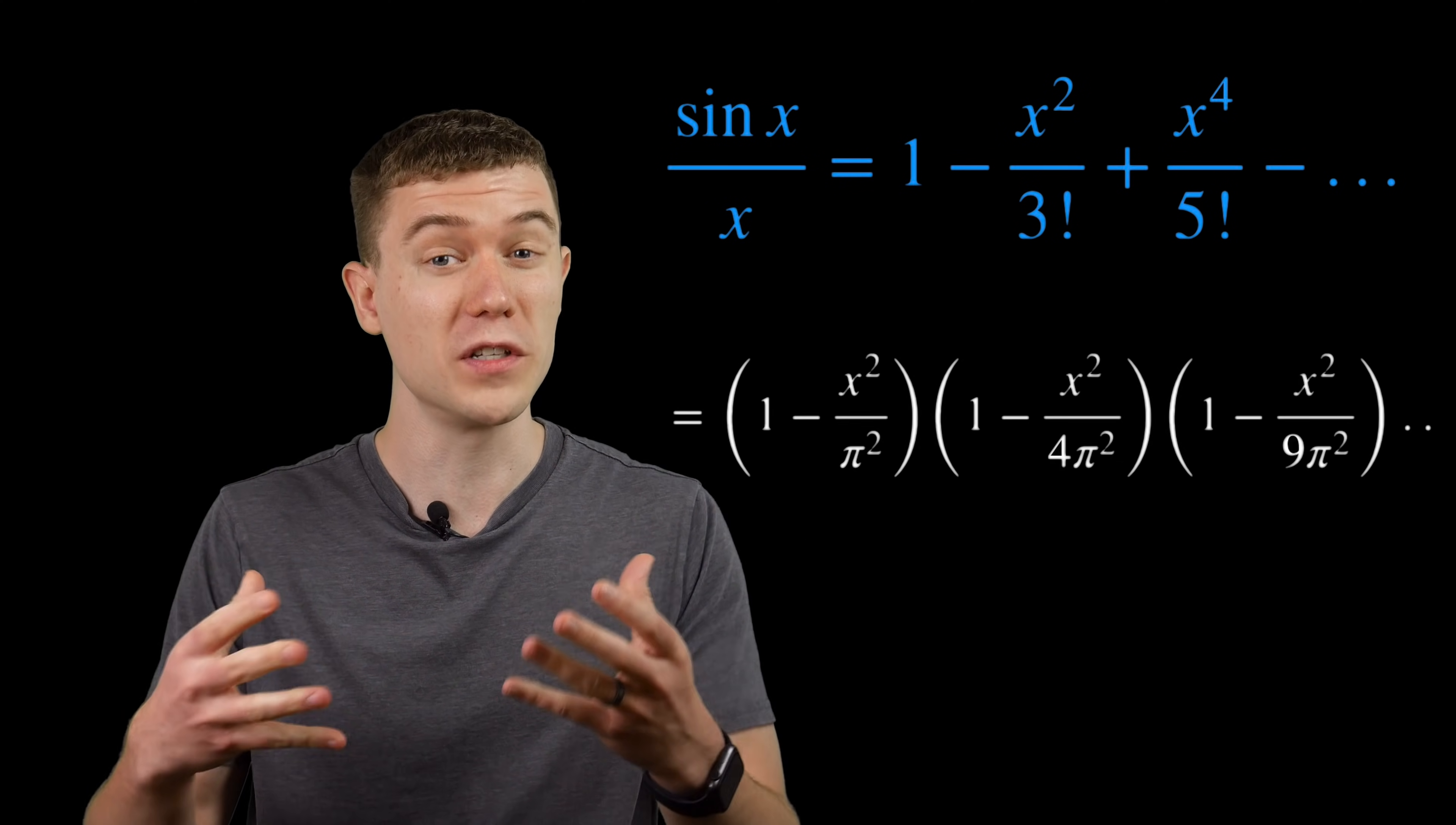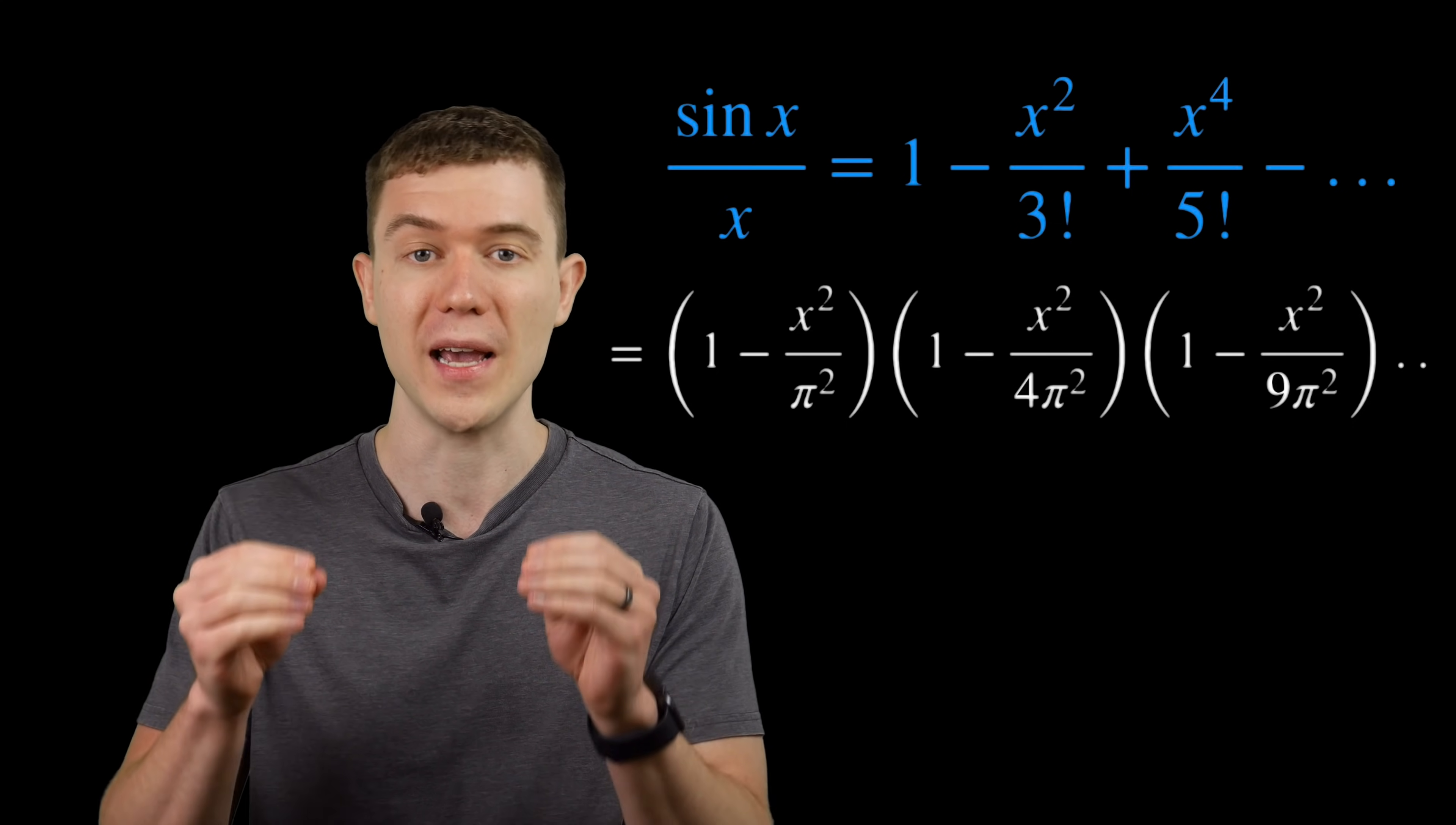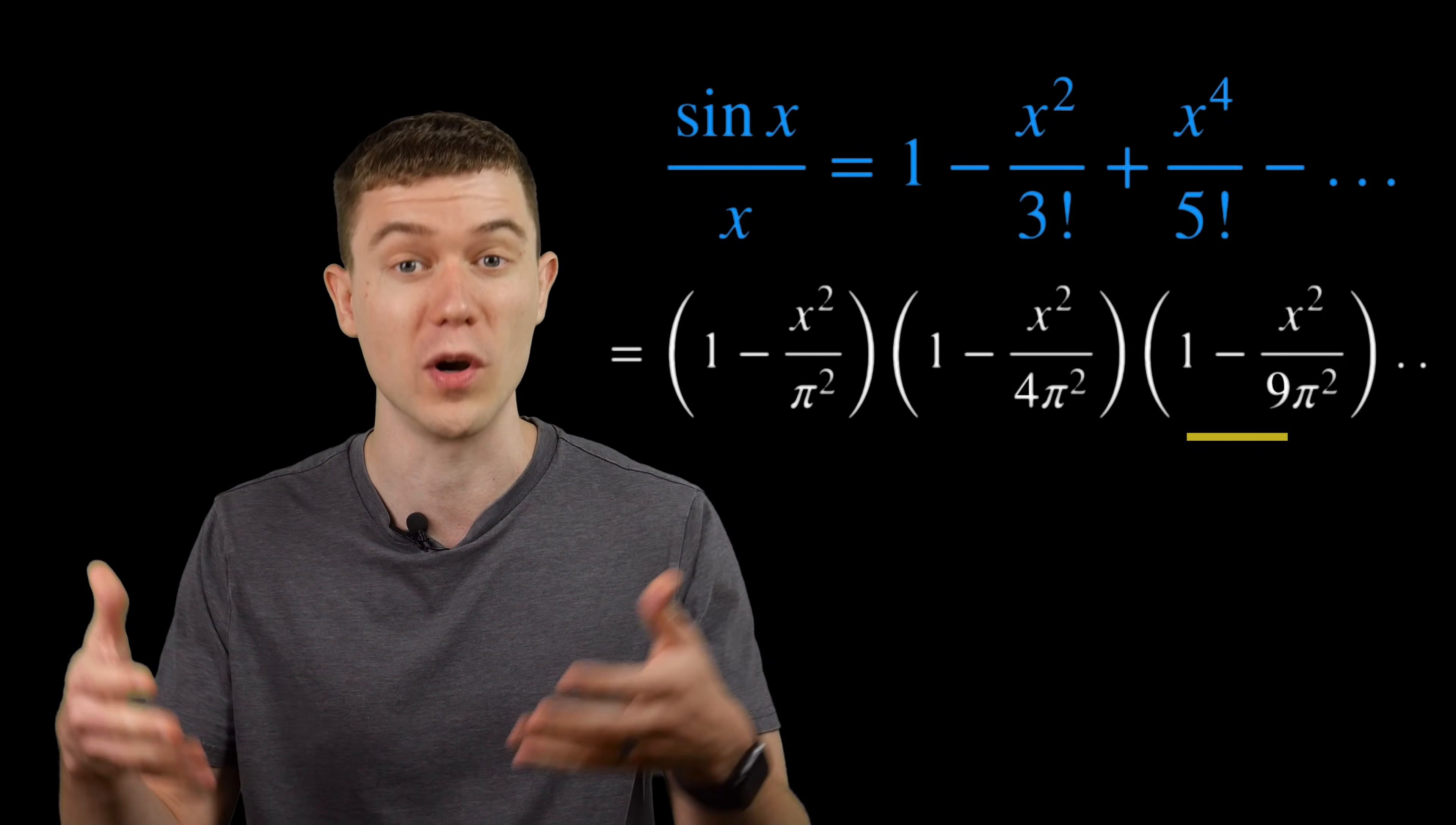If we were to multiply this all out, and then collect all of the x squared terms, pull out the x squared term, the coefficient of the x squared term would be the minus 1 over pi squared, minus 1 over 4 pi squared, minus 1 over 9 pi squared, and so on.